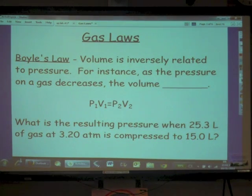What is the resulting pressure when 25.3 liters of gas in 3.2 atmospheres is compressed to 15 liters? So what's going to happen to the pressure of this gas? If its volume is 25.3 liters to begin with, and then we squeeze that gas down to a 15 liter container, what's going to happen to its pressure? Well, if its volume is decreasing, what's its pressure going to do? Its pressure is going to go up. So we should end up getting an answer that is going to be greater than 3.20 atmospheres.